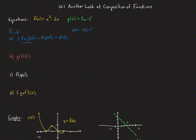That result of 4 goes into our function f. We plug 4 into f, getting 4 squared minus 2 times 4, which is 16 minus 8, equals 8. So f composed with g of 3 is equal to 8.